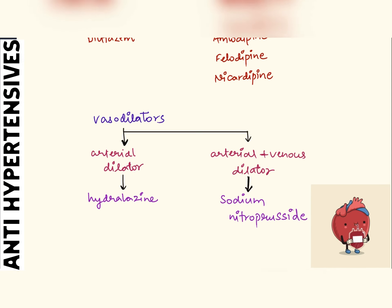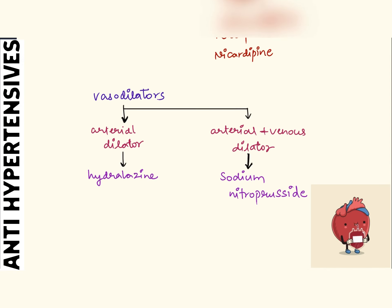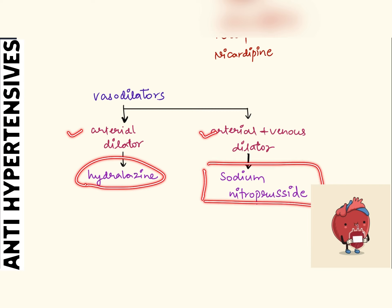The last classification is vasodilators. We have arterial dilators and arterial plus venous dilators. Hydralazine is an arterial dilator, and sodium nitroprusside is an arterial plus venous dilator.